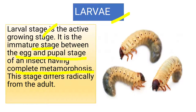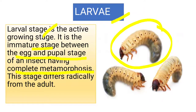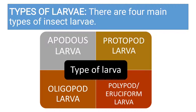This stage differs radically from the adult. As we know, in complete metamorphosis we have a larval stage — larva, then pupa, then adult. So it is an intermediate stage between egg and pupa, and the larval stage is drastically different from the adult. There are different types of larvae found in different types of insects.